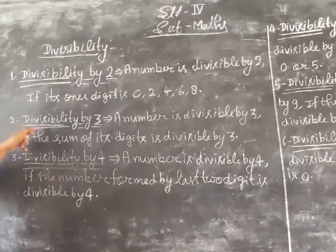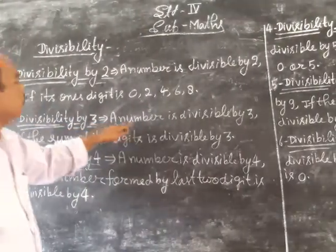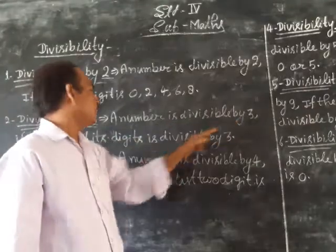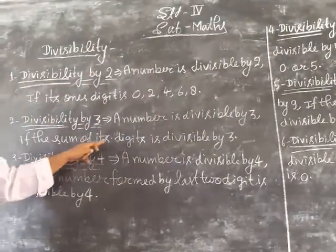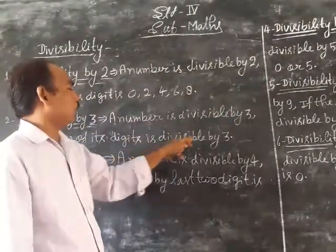Next, divisibility by 3: A number is divisible by 3 if the sum of its digits is divisible by 3.